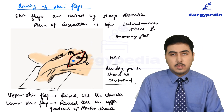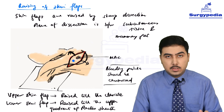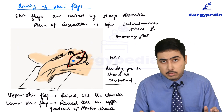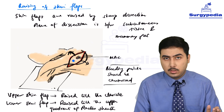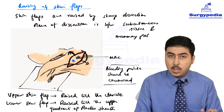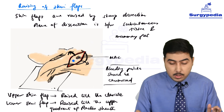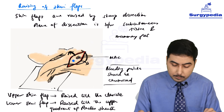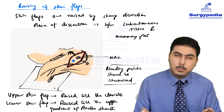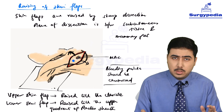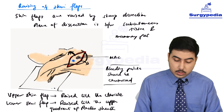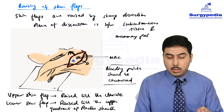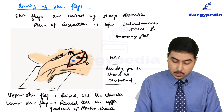This is a point important for all steps, because there are a lot of perforating vessels in this region and they are going to bleed. You have to mention this point — cauterizing bleeding points — in all steps. Let us look at a diagram after we have raised the skin flap.